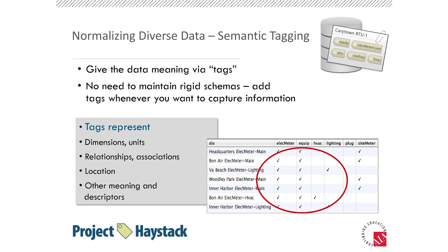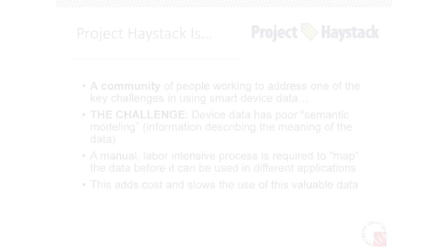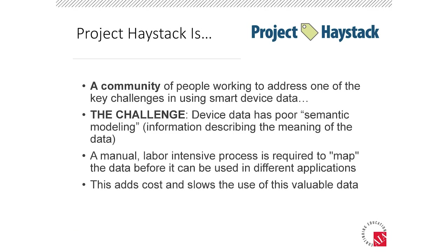That brings us to an effort to solve this: an open source, non-profit 501(c) organization started back in 2011 called Project Haystack. The focus of that organization is to solve this problem — how do we normalize and standardize the way we put descriptors on data so that if I get data from you, it's got the descriptors, I can read it, and more importantly, my software can automatically read it and do things. That's what Project Haystack is about.